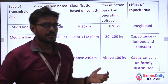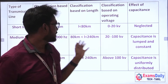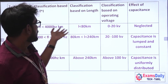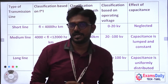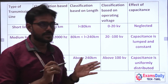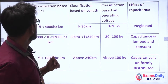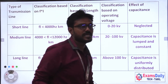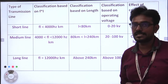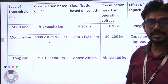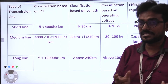How do you ask MCQ questions? In the table, you see each line — 12 points, 12 MCQ. How do you ask MCQ? Transmission line classification is based on frequency and length, and also based on operating voltage. That is the capacitance effect.